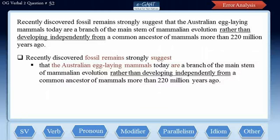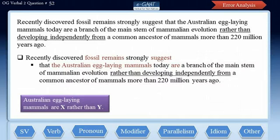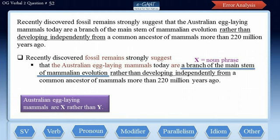As discussed in the meaning analysis, the marker 'rather than' suggests that there is a list in this sentence: 'the Australian egg-laying mammals are X rather than Y,' where X and Y should be logically and grammatically parallel. Logically they are parallel, but grammatically they are not. The phrase 'a branch of the main stem of mammalian evolution' is entity X, which is a noun phrase because it begins with 'a branch.'